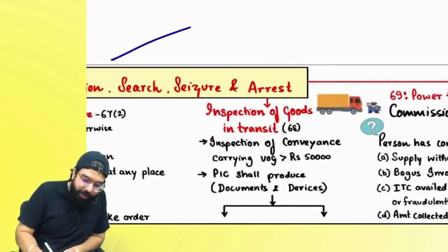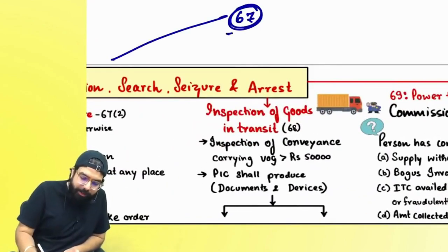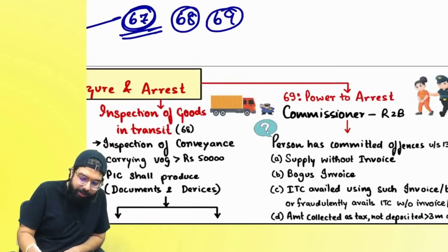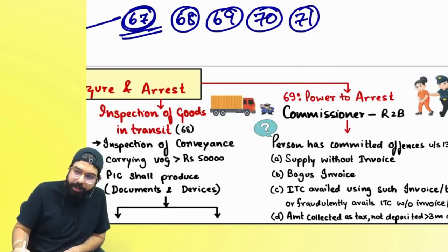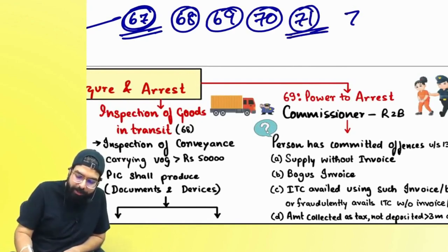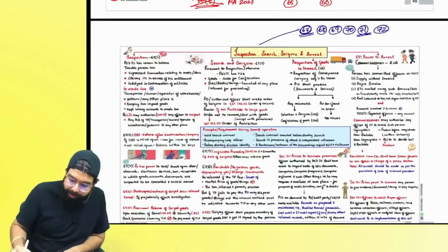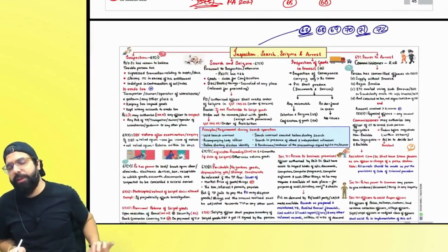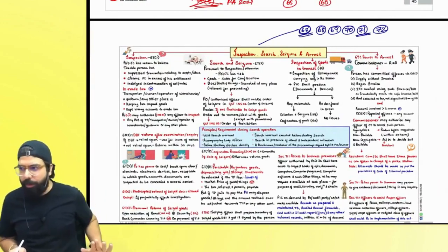Inspection, search, seizure — we will be learning section number 67; inspection, search and seizure — 68, inspection of goods in transit — 69, arrest — 70 is summons, 71 is access to premises, and 72 is other officers to assist the proper officer in implementation of the GST law.